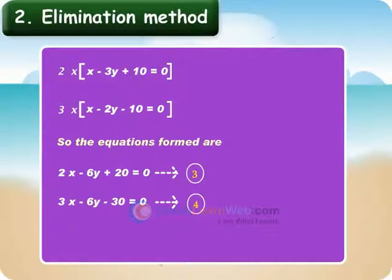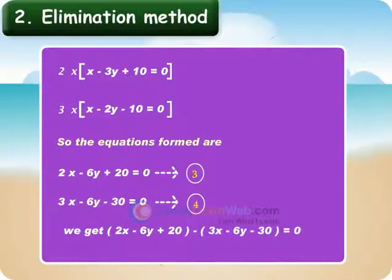Step 2: Subtract equation 4 from equation 3 to eliminate Y as the coefficients of Y are same. So, we get 2X minus 6Y plus 20 minus 3X minus 6Y minus 30 is equal to 0.